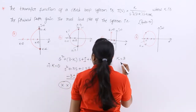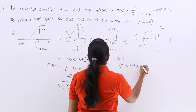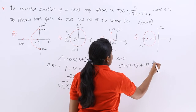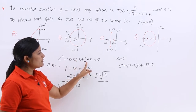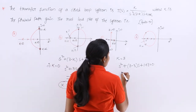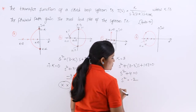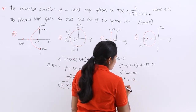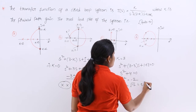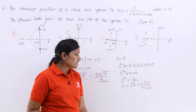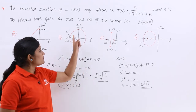Substituting K=3 into the characteristic equation: S² + (3−3)S + (1+3) = 0, which gives S² + 4 = 0. Therefore S² = −4, so S = ±j√2. We get two imaginary poles at ±j√2 when K=3, confirming that the poles are purely imaginary at this gain value.